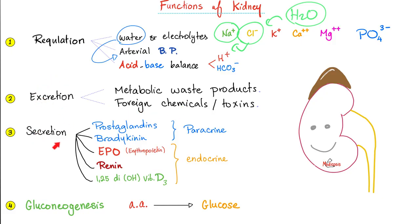The kidney can secrete — you can think of your kidney as a bunch of glands, some paracrine, some endocrine. Your kidney is an endocrine organ too. Paracrine means secreting to the local tissue through interstitial fluid; endocrine means secreting hormones to the blood to reach distant organs. Paracrine examples: the kidney secretes prostaglandin and bradykinin. Prostaglandin dilates vessels, is pro-fever, and can cause pain. Bradykinin dilates blood vessels.